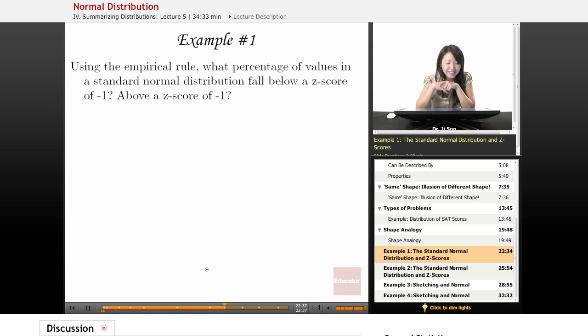So, example one. Using the empirical rule, what percentage of values in a standard normal distribution fall below a z-score of negative one, or what falls above a z-score of negative one?